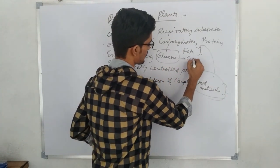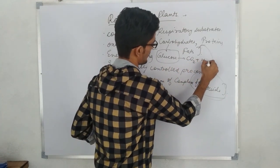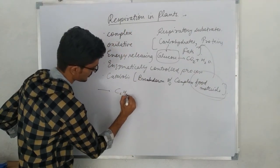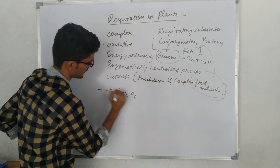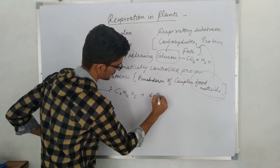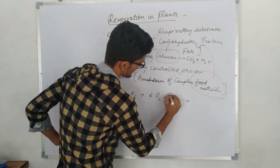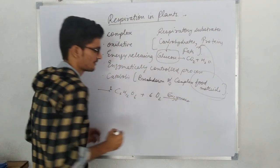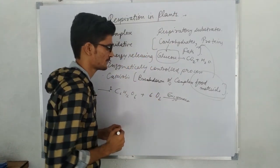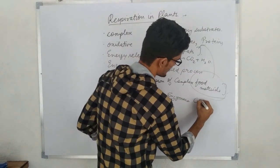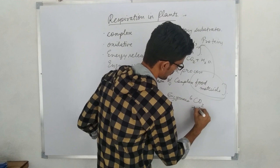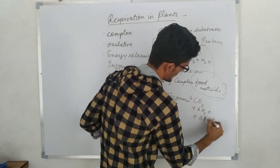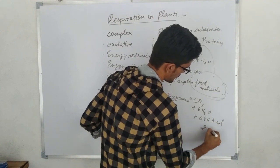The complete reaction is: C6H12O6 (one molecule) plus six molecules of oxygen, in the presence of various enzymes — a lot of enzymes are used in this process — gets converted into six CO2 plus six H2O, and a huge amount of energy is released.